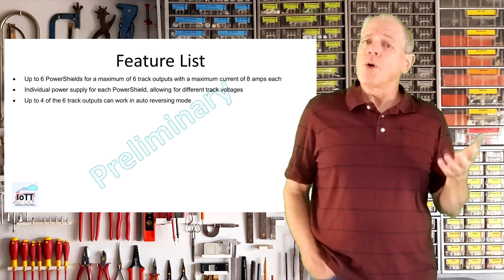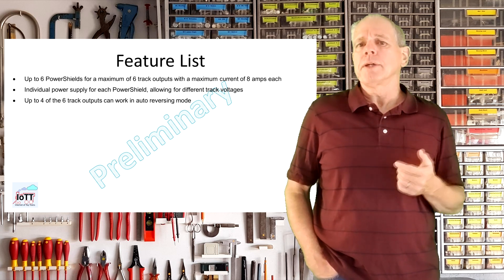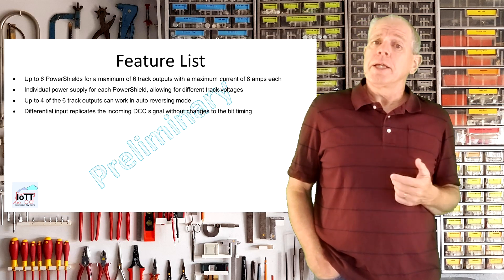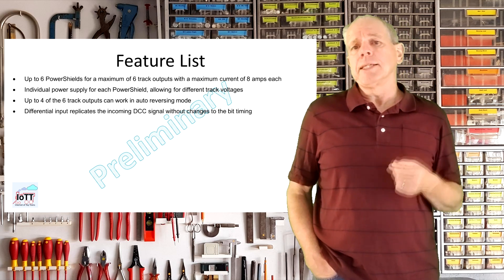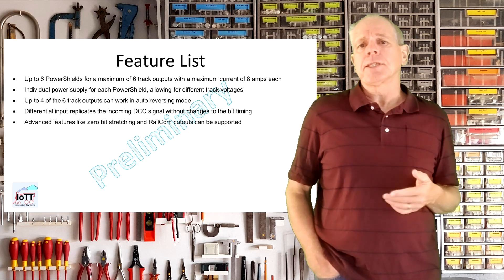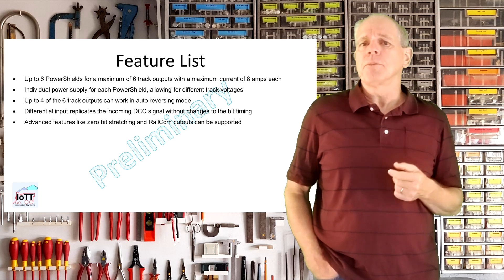Up to 4 of the 6 track outputs can work in auto reversing mode to power reversing loops and the like. The differential input replicates the incoming DCC signal without changes to the bit timing. This means advanced features like 0-bit stretching and railcom cutouts can be supported.